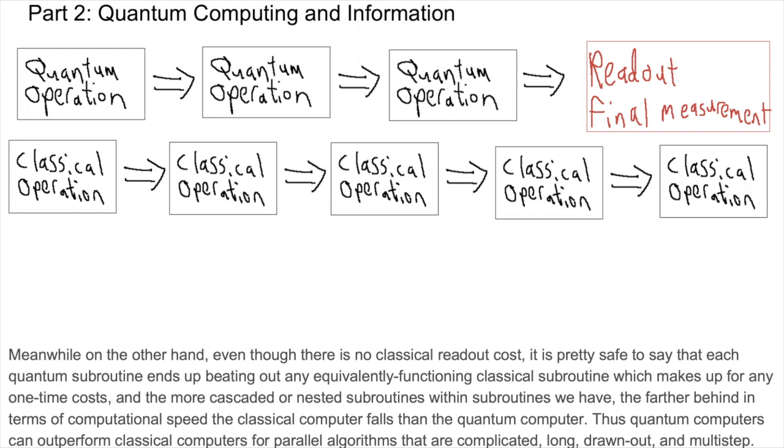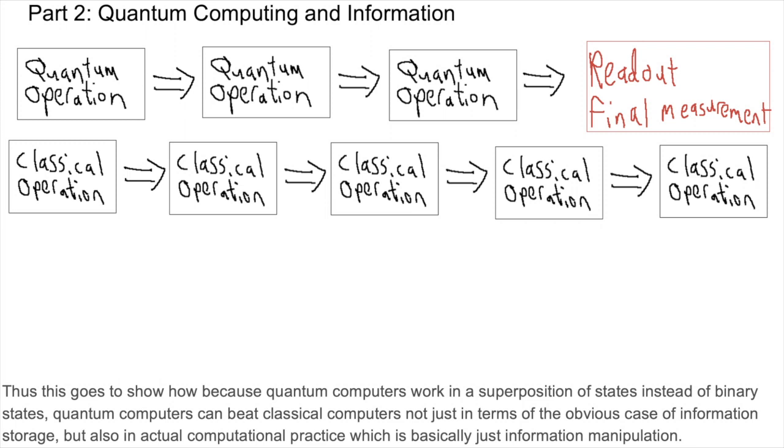Thus, quantum computers can outperform classical computers for parallel algorithms that are complicated, long, drawn-out, and multi-step. And thus, this goes to show how, because quantum computers work in a superposition of states instead of binary states, quantum computers can beat classical computers not just in terms of the obvious case of information storage density, but also in actual computational practice, which is basically just information manipulation.